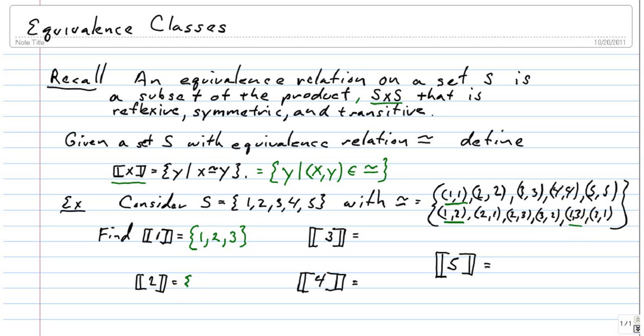Now how about the equivalence class of 2? Let's see. 2 is certainly related to 2. So we have 2 in there. 2 is related to 1. So we have 1 in there. Then 2 also happens to be related to 3. Notice these have the same equivalence class. That might be an important fact.